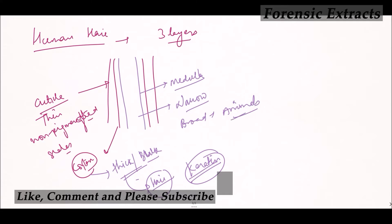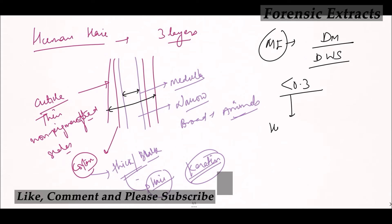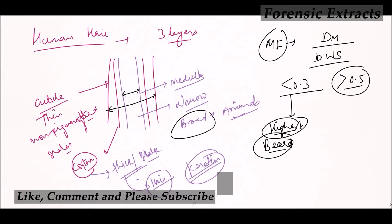The medullary index is the diameter of the medulla divided by the diameter of the whole hair shaft. In humans, the medullary index is less than 0.3 because the medulla is narrow. The highest medullary index among human hairs is found in beard hair. In animal hair, the medullary index is more than 0.5 because the medulla is broad.